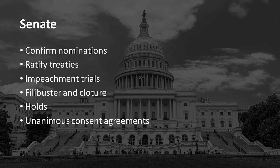Now let's turn our attention to the Senate. The Senate has confirmation power, which in the Constitution is known as advice and consent. They can confirm nominations — sometimes heads of executive agencies, definitely federal judges. The Senate also has the power to ratify treaties. They hold the impeachment trial, as discussed earlier. And then there are things like the filibuster, holds, and unanimous consent agreements.